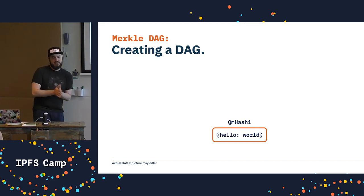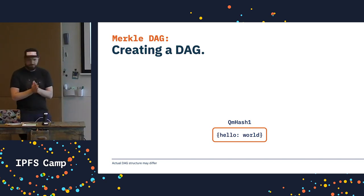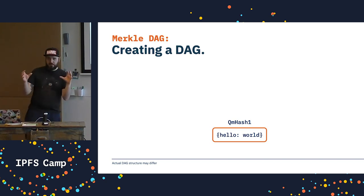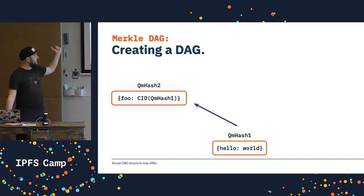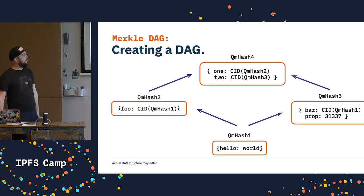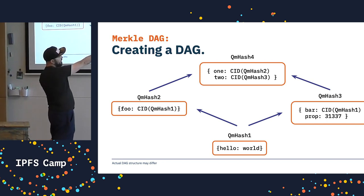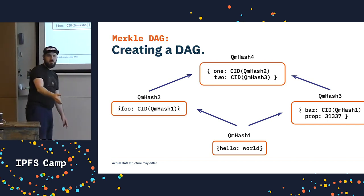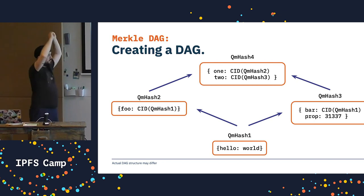Let's build a DAG. One interesting thing about building hash-based data structures is that you have to build them backwards, so get used to writing recursive functions. We start with 'hello world' as our leaf node — we get a hash of that, QM hash 1. Now we build the first branch to that leaf node, an object with a property 'foo' pointing at this leaf node, getting QM hash 2. We can create another branch with a 'bar' property pointing to the same leaf node plus some arbitrary data. Both are referred to in the root, so both get hashed and used as properties in the root node.